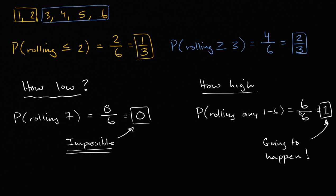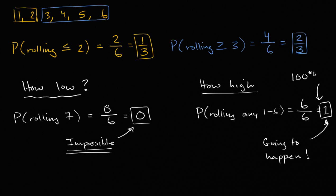You might be thinking you've seen numbers larger than one, but you're probably thinking of percentages. One as a percentage is 100%, but 100% is the same thing as one. You can't have a probability of 110% — 110% would be the same thing as 1.1.